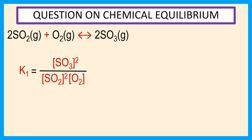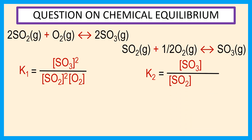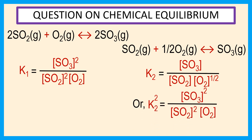Our second reaction is SO₂ gas plus half O₂ gas reversible to SO₃ gas. The equilibrium constant for this reaction is K2 equal to the concentration of SO₃, divided by the concentration of SO₂ multiplied by the concentration of O₂ to the half power. Therefore, K2 squared equals the square of the concentration of SO₃ divided by the square of the concentration of SO₂ multiplied by the concentration of O₂.